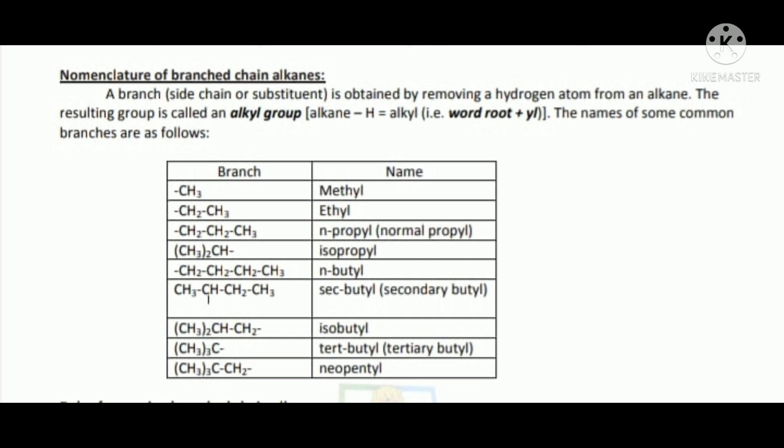For example, CH4 is methane. Removing one hydrogen gives CH3 — the methyl group. CH3CH3 is ethane; removing one H gives CH2CH3 — the ethyl group.